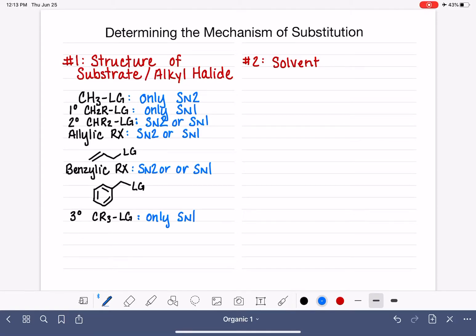If you're trying to determine which mechanism a substitution reaction will take place by, if you're trying to determine if a reaction is SN1 or SN2, the first factor you should consider is the structure of the substrate or the molecule that's undergoing substitution.